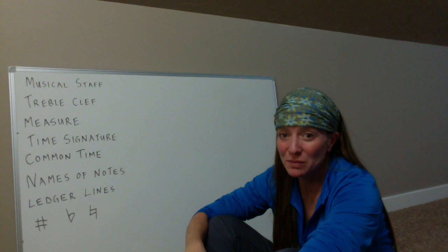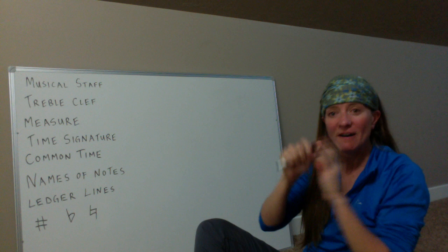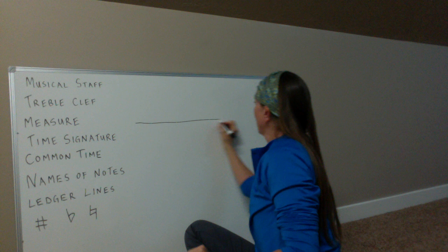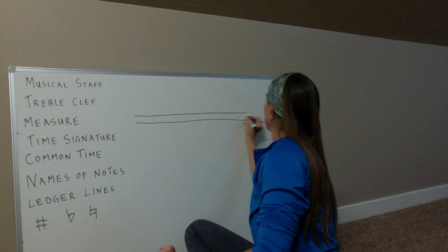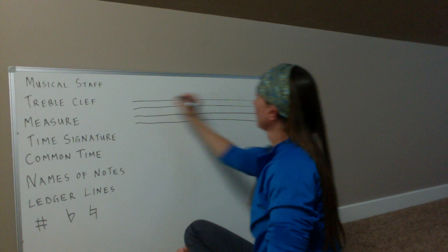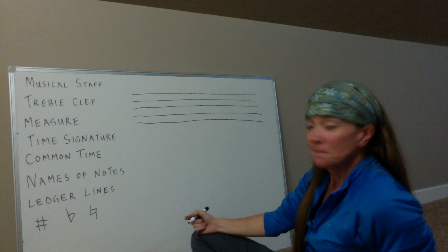The musical staff actually consists of five lines. So we just start off with this line — one, two, three, four, five. When you look at music, it will have five lines like this. This is called the musical staff. Piece of cake, right?